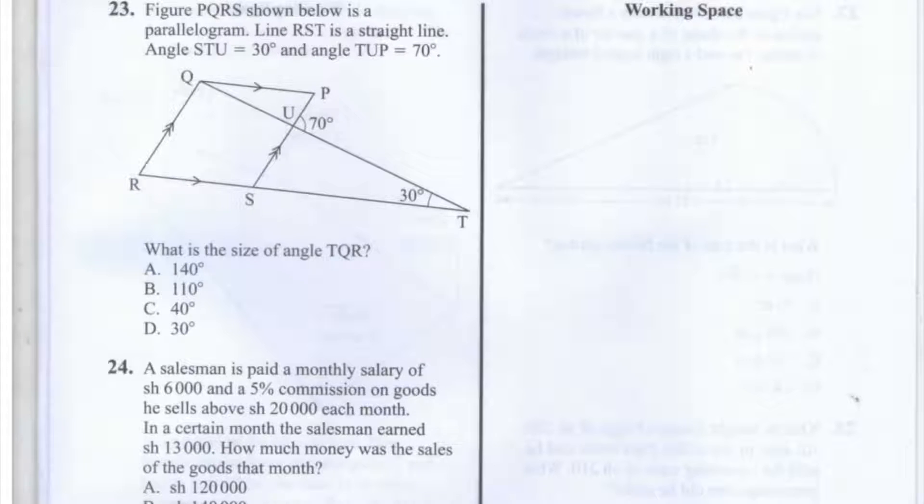Angle STU is equal to 30 degrees, and angle TUP is equal to 70 degrees. So these are the angles here and here, that are 30 and 70 degrees. We're asked, what is the size of angle TQR?